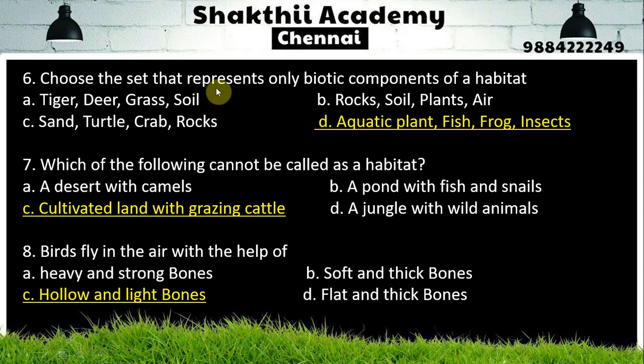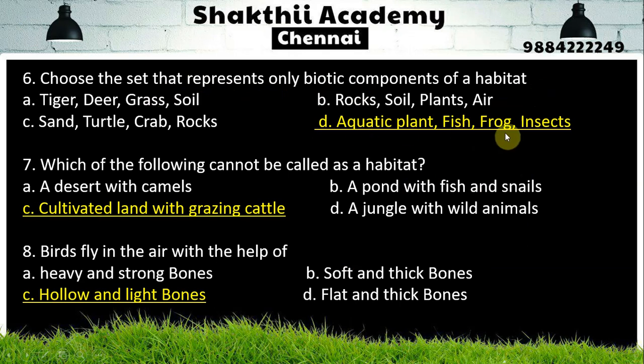Choose the set that represents only biotic components of a habitat. The answer is: aquatic plant, fish, frog, and insects.